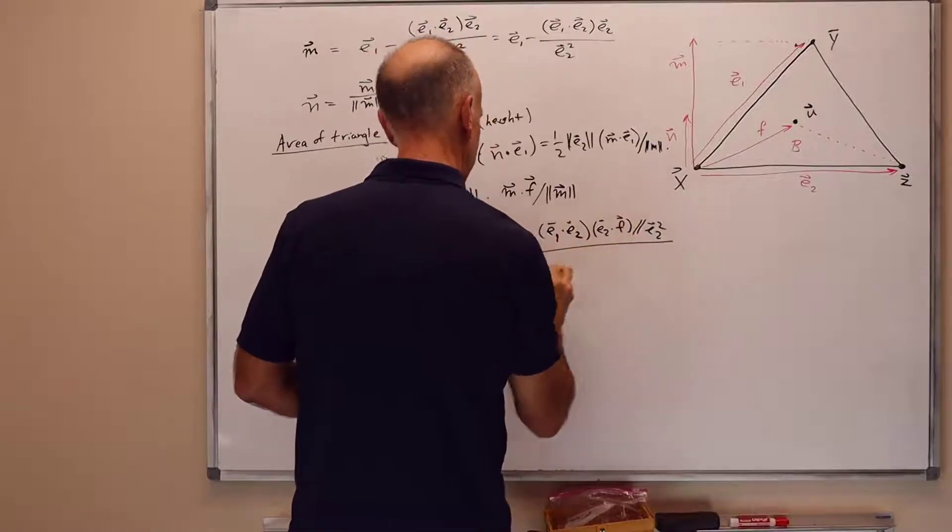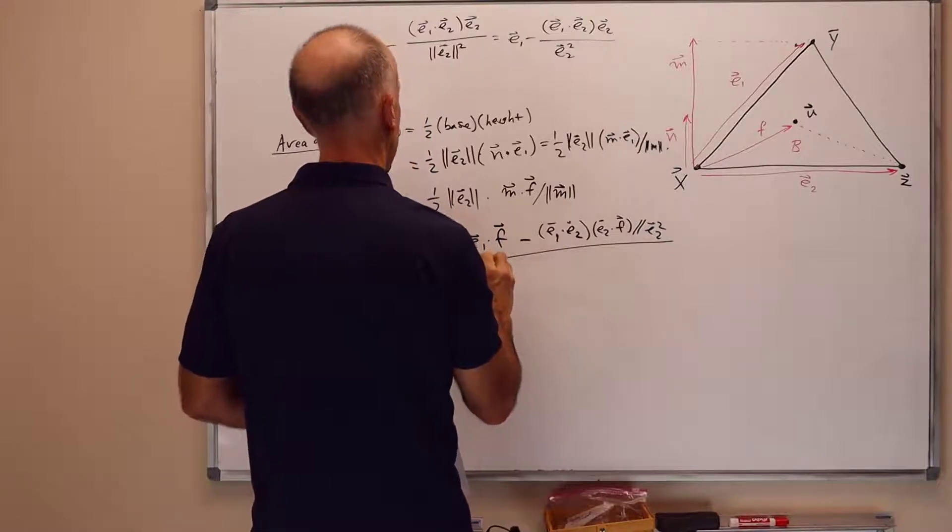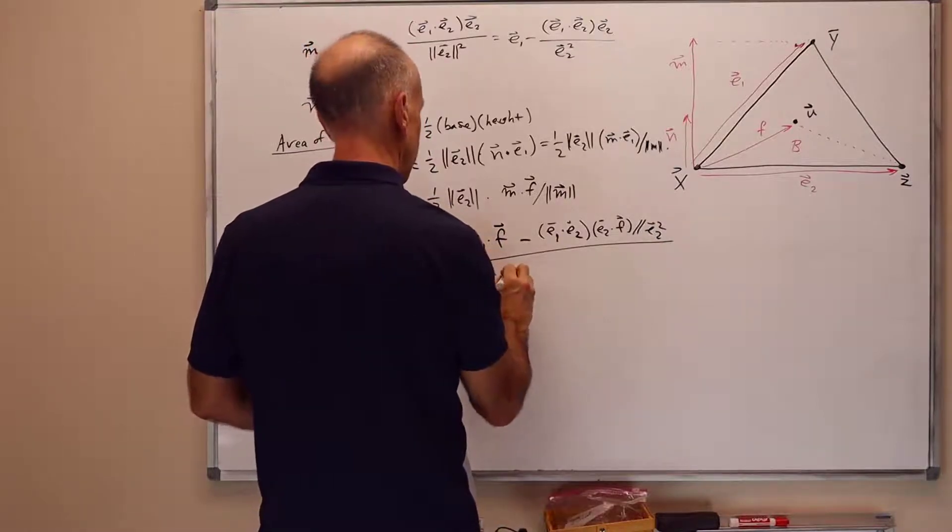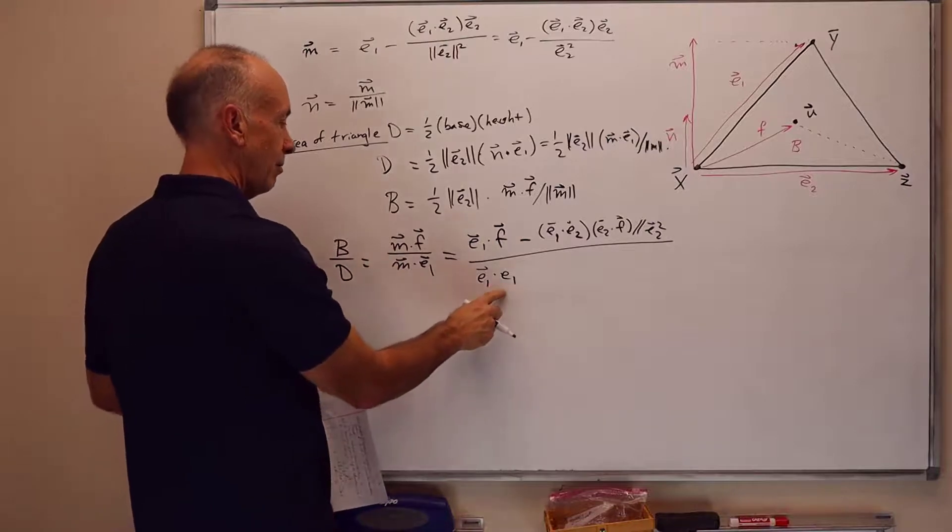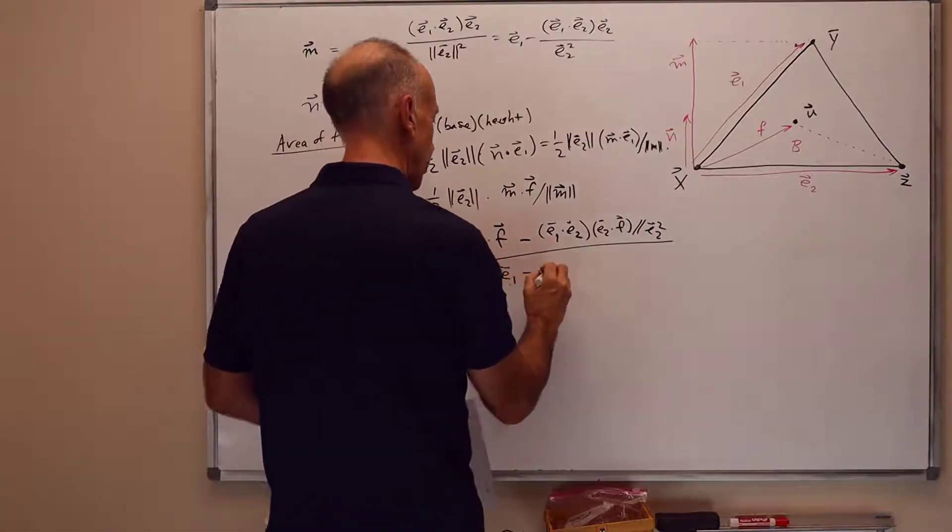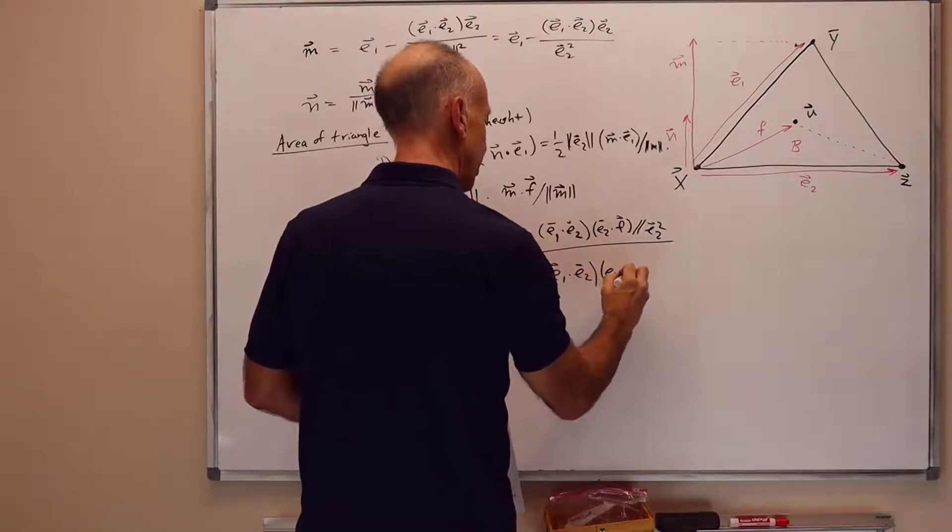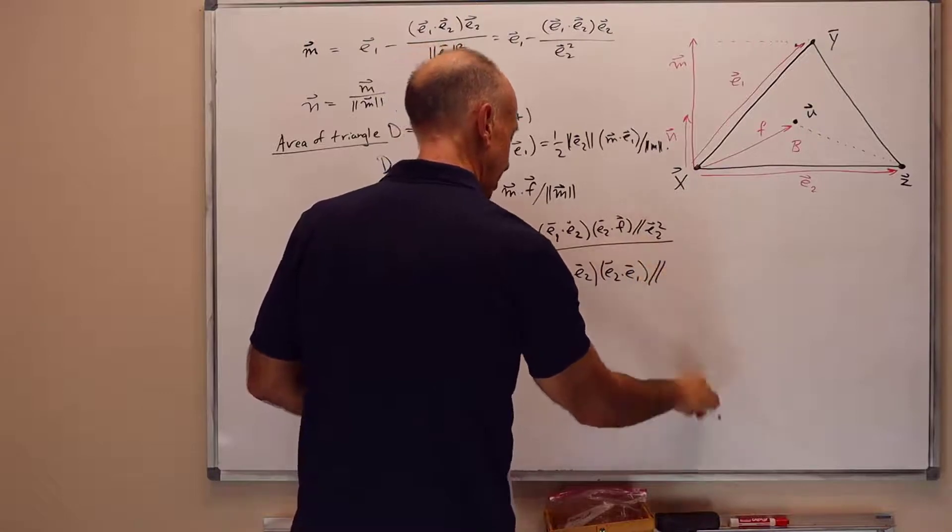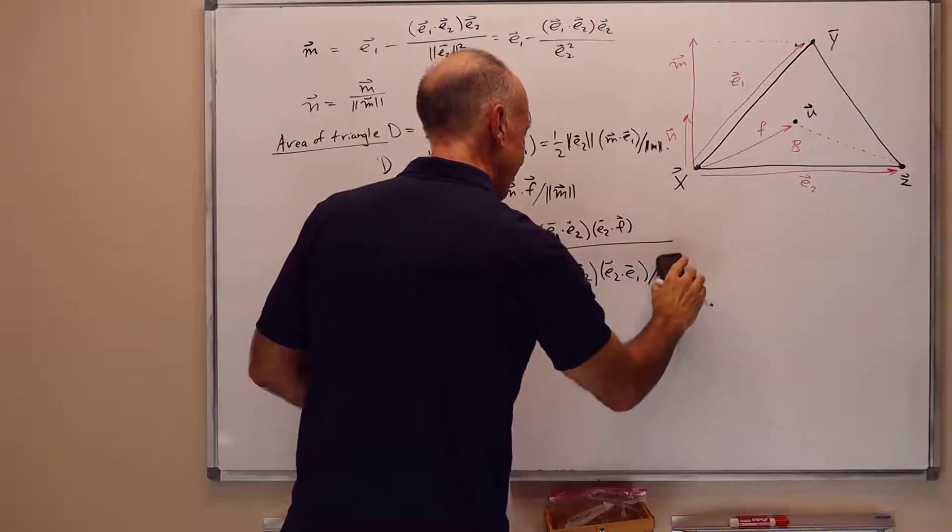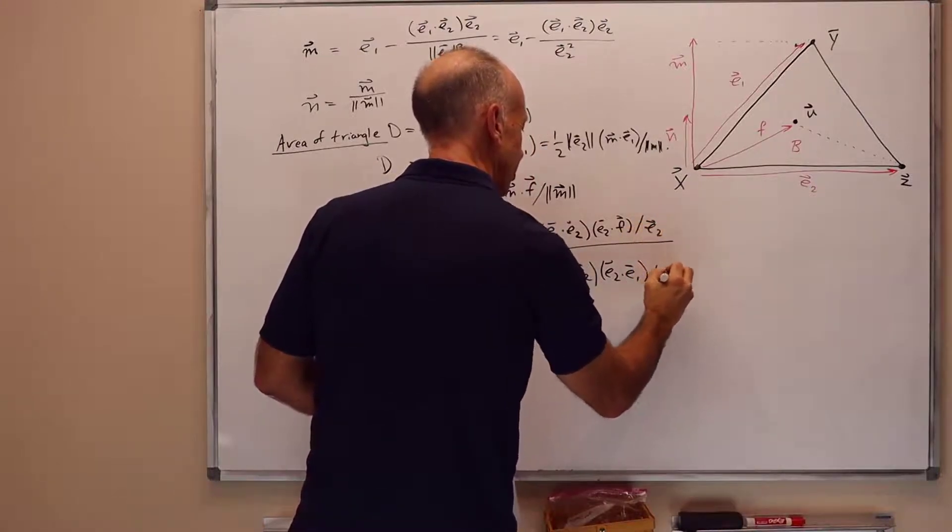And the whole thing is over e1 dot e1 minus e1 dot e2 times e2 dot e1 divided by e2 squared.